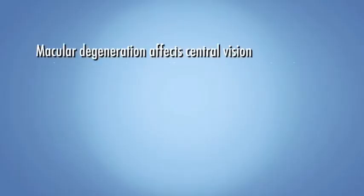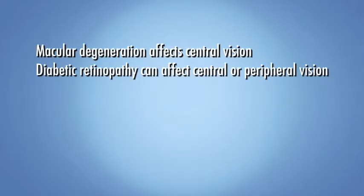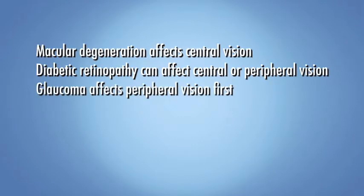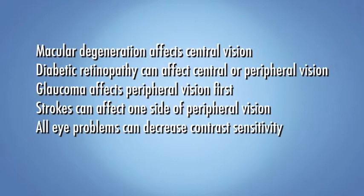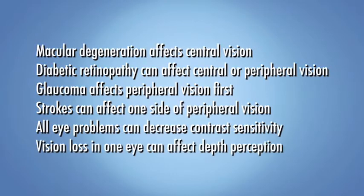For example, macular degeneration affects central vision. Diabetic retinopathy can affect central or peripheral vision. Glaucoma affects peripheral vision first. Strokes can affect one side of peripheral vision. All eye problems can decrease contrast sensitivity, and vision loss in one eye can affect depth perception.